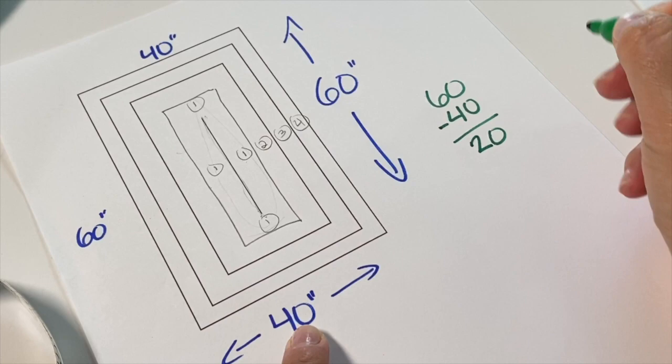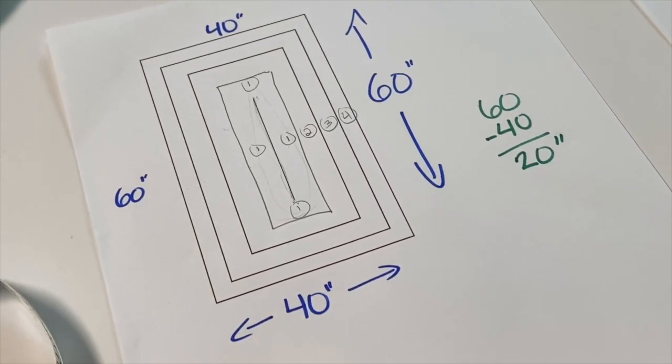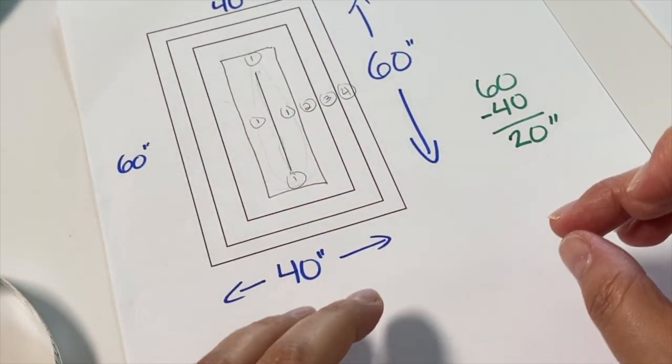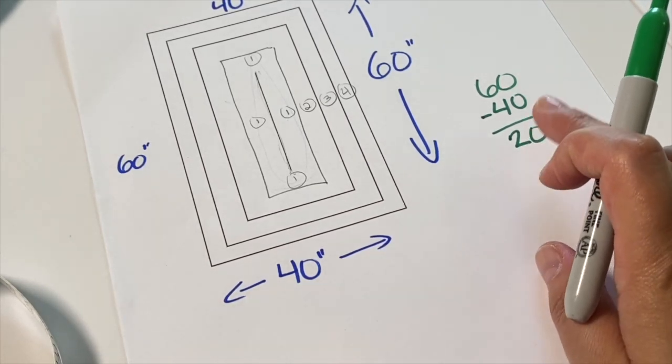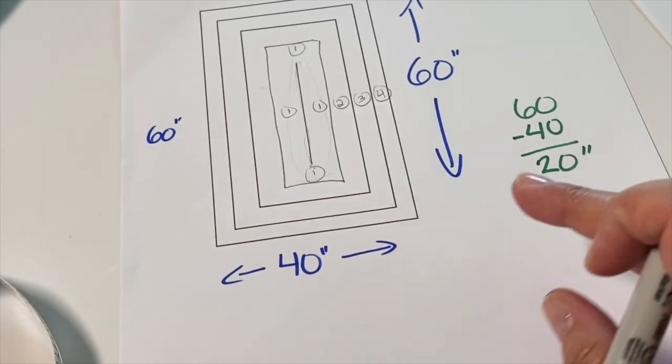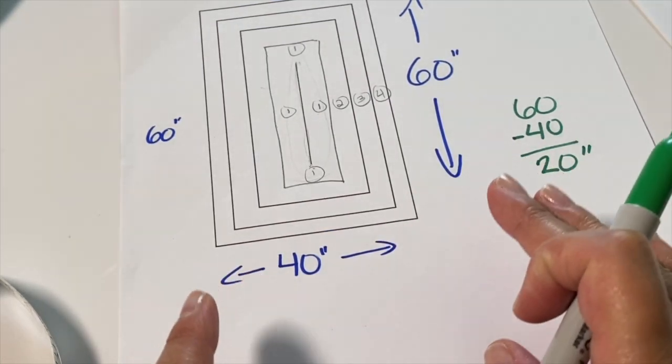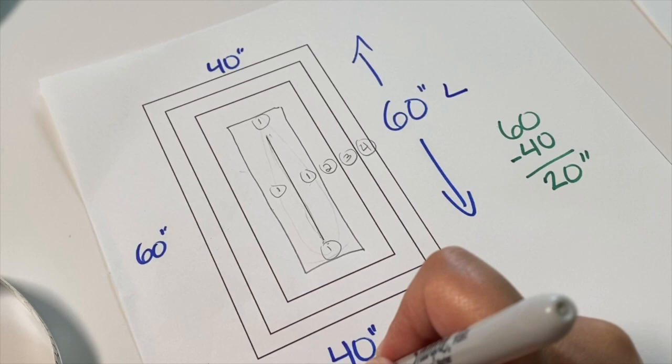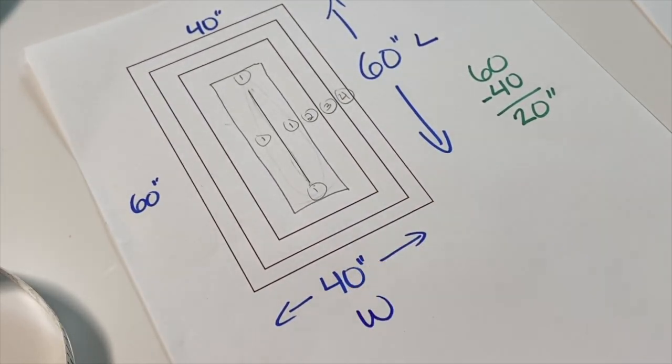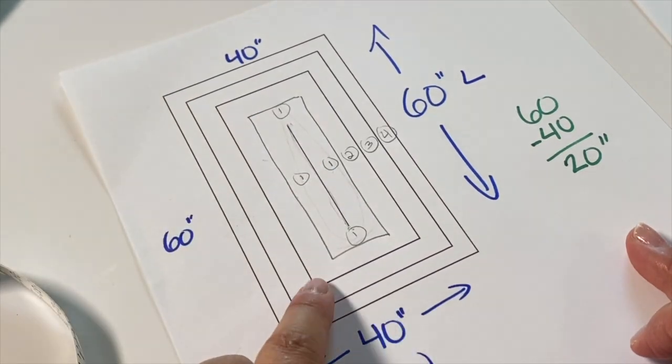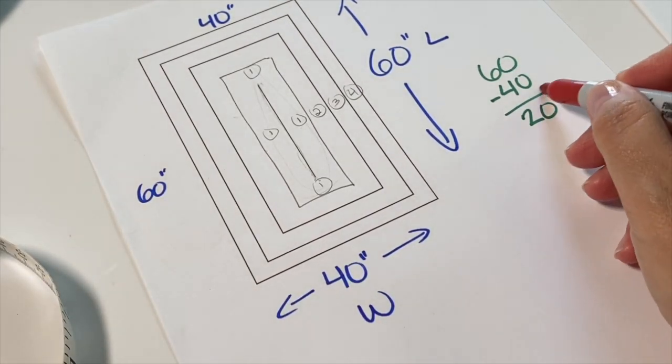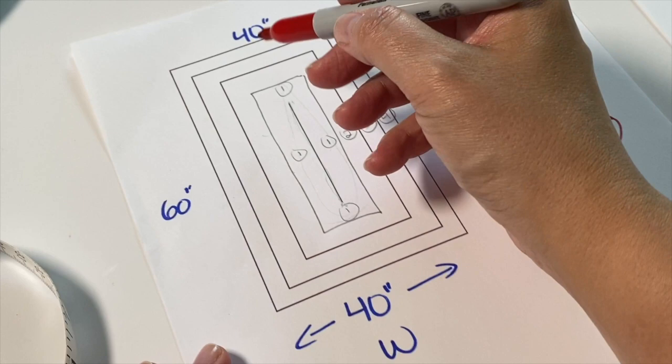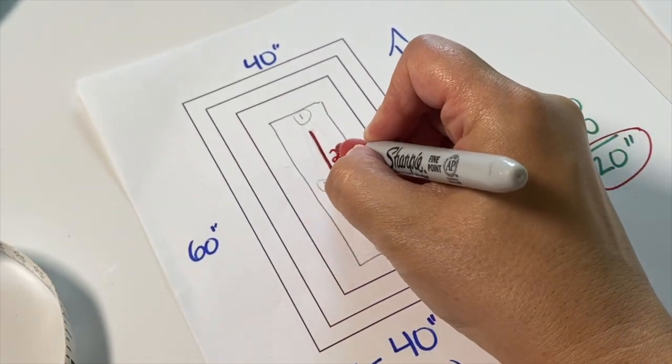How you find this length of chain is you take your length measurement, which is always your longest. So you have 60 and you subtract your width measurement, which is always your shortest. And that is going to give you a difference of 20 inches. So what does that tell me? It tells me that in order for all my sides to increase equally, I've got to take away 20 inches from the length.